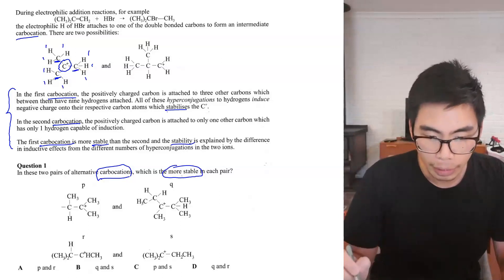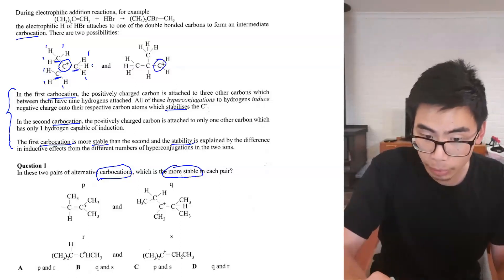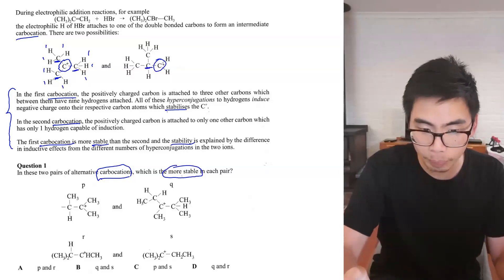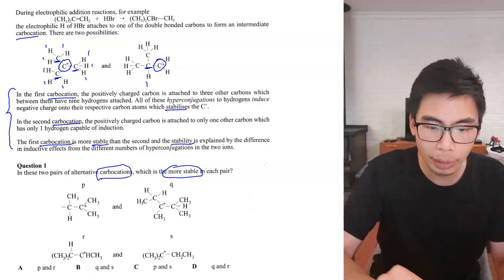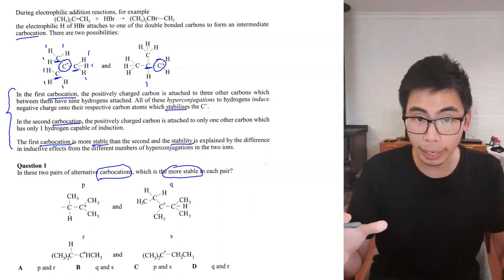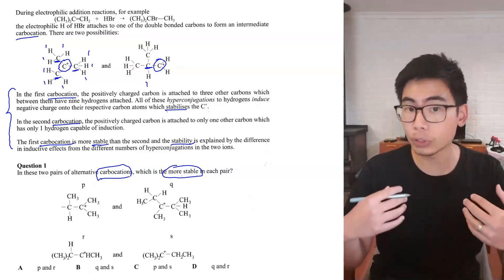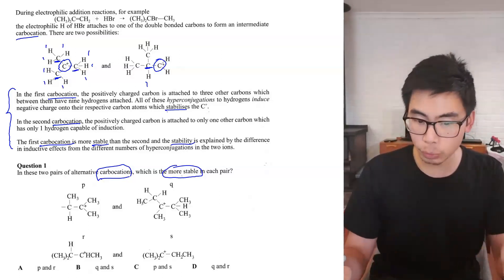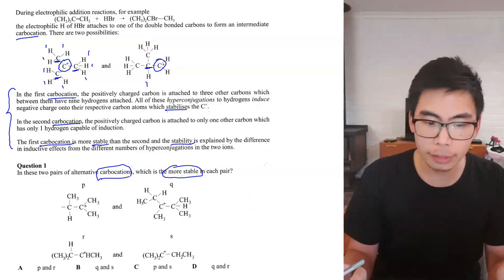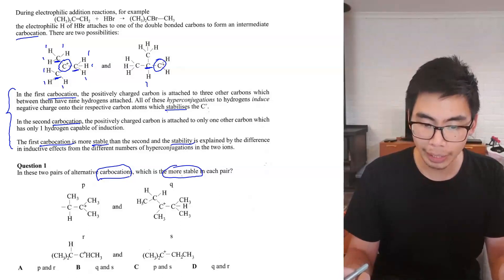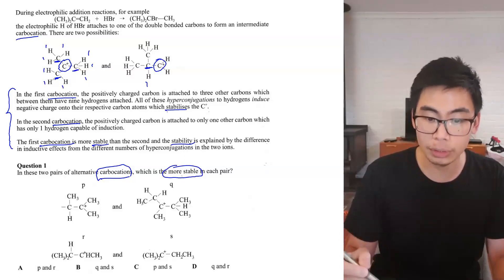In the second carbocation, the positively charged carbon is attached to only one other carbon, which has only one hydrogen capable of induction — so just the one hyperconjugation there. The first carbocation is more stable. This is great because the question was asking us to compare two structures and figure out which is more stable, and here it's telling us that the first carbocation is more stable than the second.